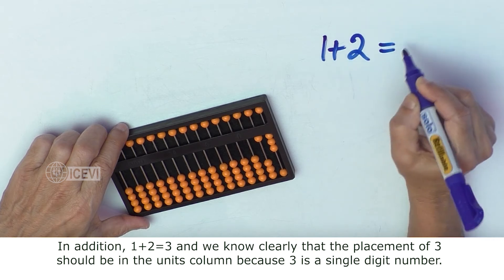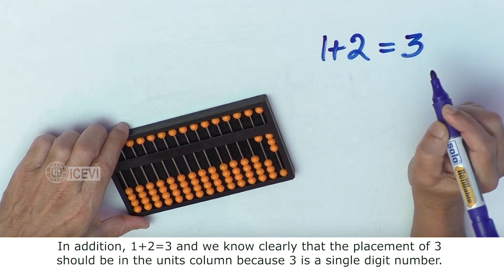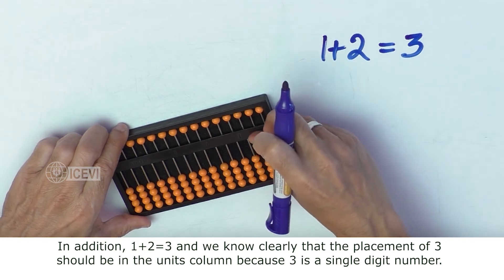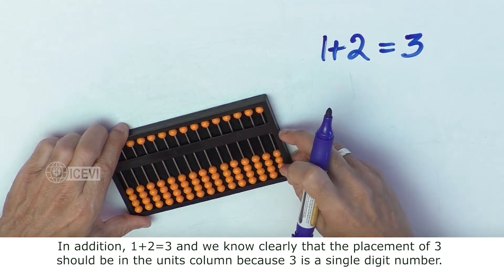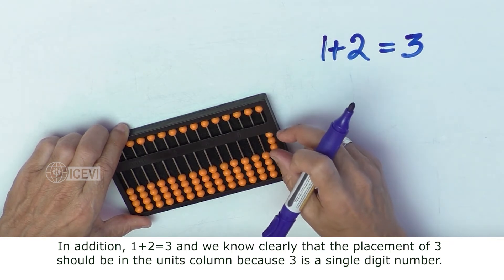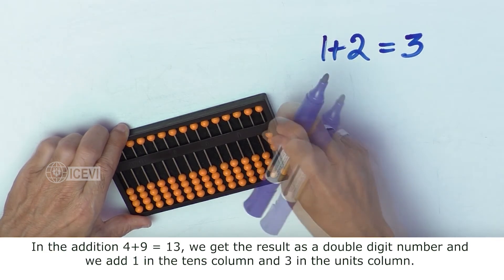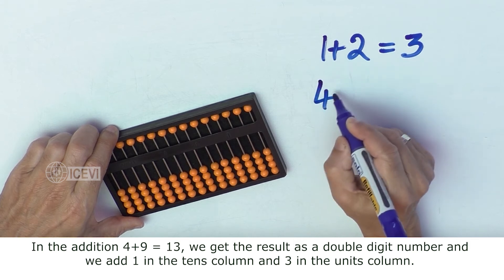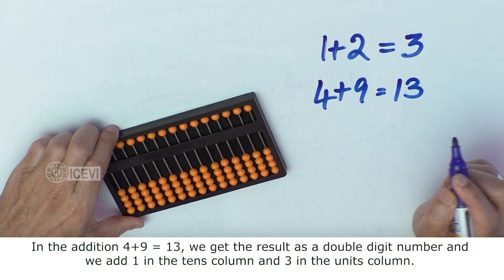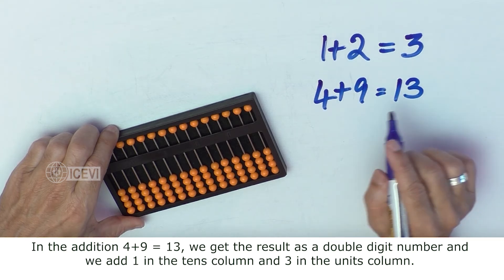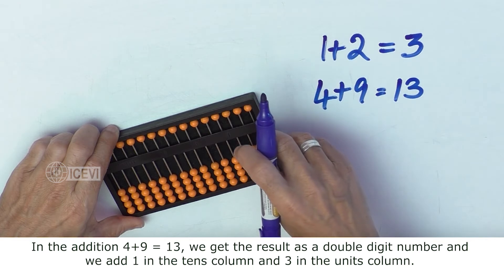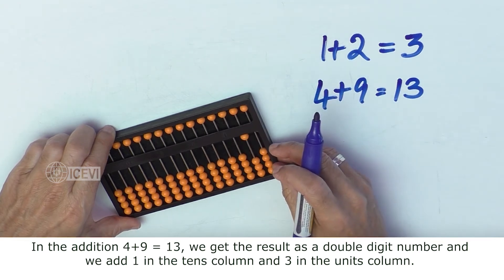In addition, 1 plus 2 equals 3 and we know clearly that the placement of 3 should be in the units column because 3 is a single digit number. In the addition of 4 plus 9 which is 13, we get the result as a double digit number.